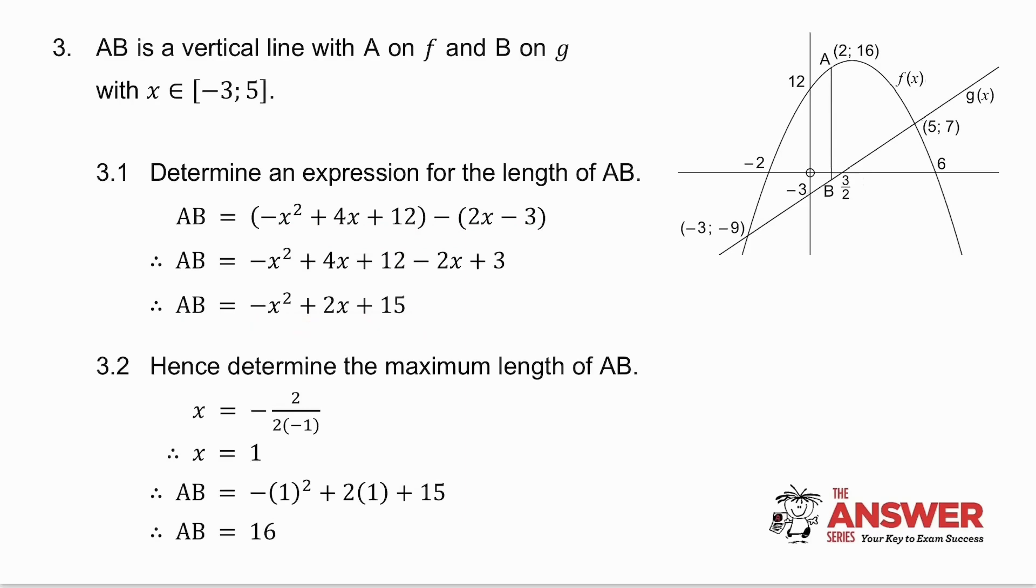I now want the maximum length. Now, what is happening is this line AB is getting bigger and bigger and then smaller and smaller. That is a quadratic. The coefficient of x squared is negative. So it looks like that. If I want the maximum length, that means I want to know the turning point. How do I find the turning point of a parabola? I use x equals minus b over 2a, and I get that x is 1. I then take x is 1 and substitute back into AB, and I get that the length of AB, when it is a maximum, is 16.